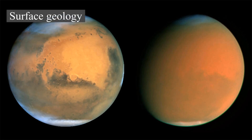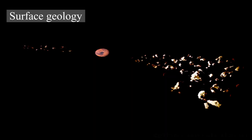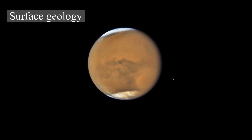Mars is a terrestrial planet with a surface consisting of minerals containing silicon and oxygen, metals, and other elements that typically make up rock. The Martian surface is primarily composed of tholeiitic basalt, although parts are more silica-rich than typical basalt and may be similar to andesitic rocks on Earth or silica glass. Regions of low albedo suggest concentrations of plagioclase feldspar, with northern low-albedo regions displaying higher concentrations of sheet silicates and high-silicon glass. Localized concentrations of hematite and olivine have been found, and much of the surface is deeply covered by finely grained iron(III) oxide dust.